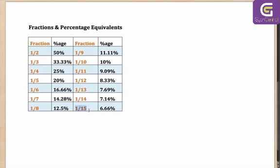One-fifteenth: there are plenty of ways of doing this. You have one-fifth as 20, so one-third of that is 6.66. You could also have done it as one-third is 33.33, divided by five — that would have led you to the same result of 6.66.